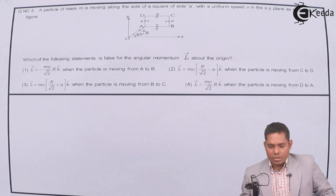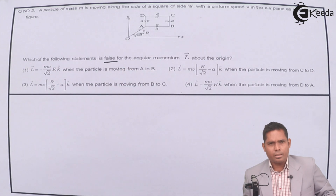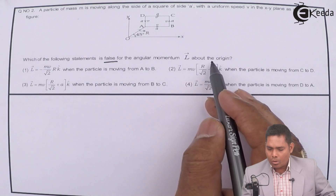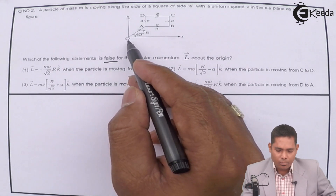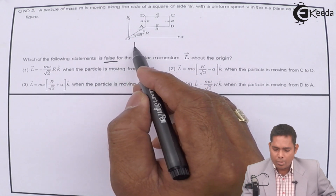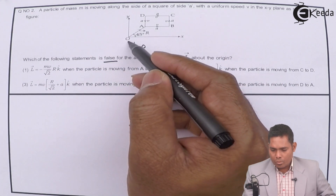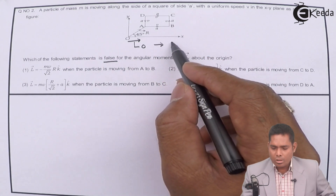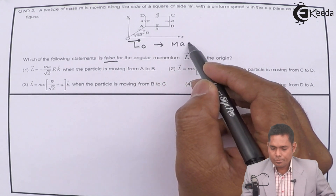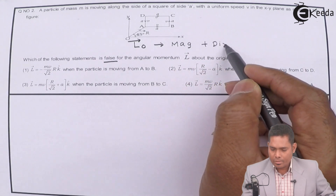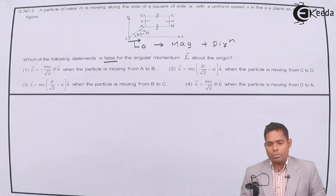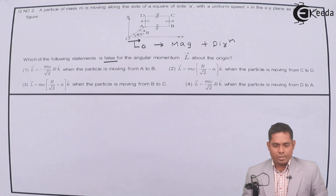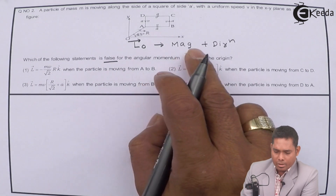Which of the following statements is false? The key point is you have to pick the false statement. For angular momentum about the origin, since angular momentum is a vector, you have to notice two things: its magnitude and its direction. If your answer is not matching, then that answer is false.